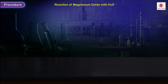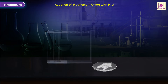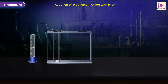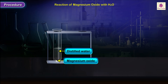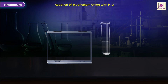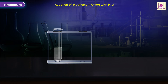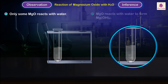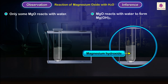Procedure — reaction of magnesium oxide with water. Transfer the powder into a clean test tube and add 5 to 6 milliliters of distilled water. Shake the test tube well to mix the contents thoroughly. Observation: only some magnesium oxide reacts with water. Magnesium oxide reacts with water to form magnesium hydroxide.